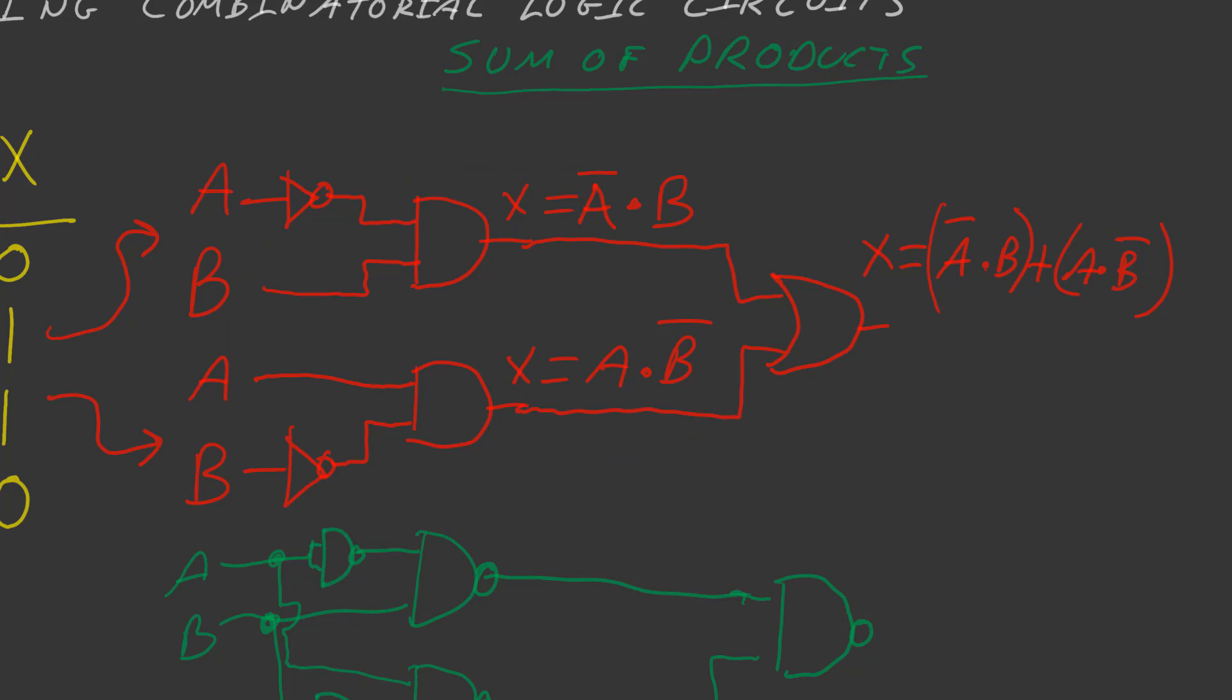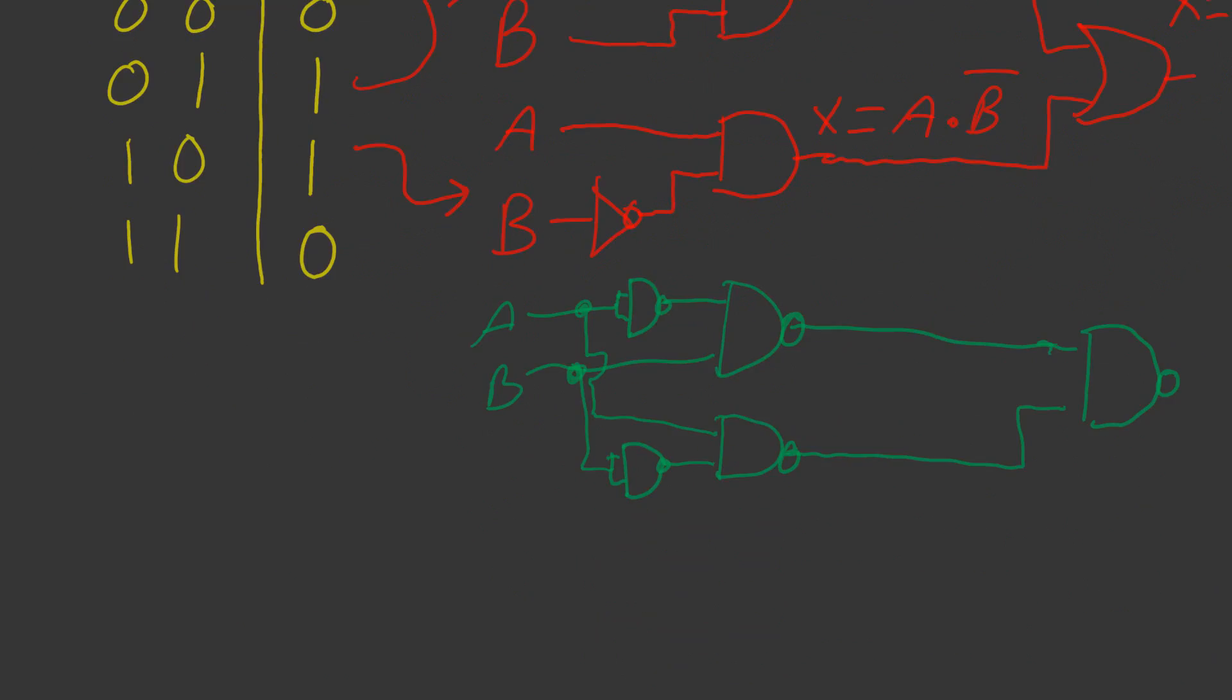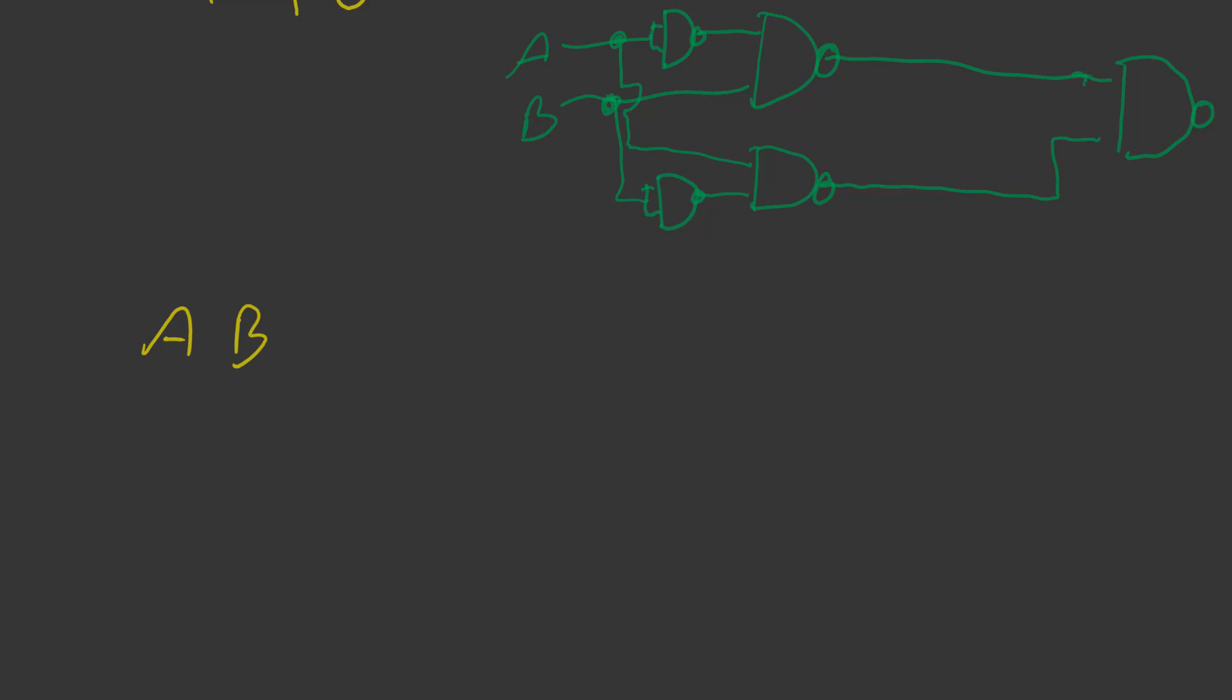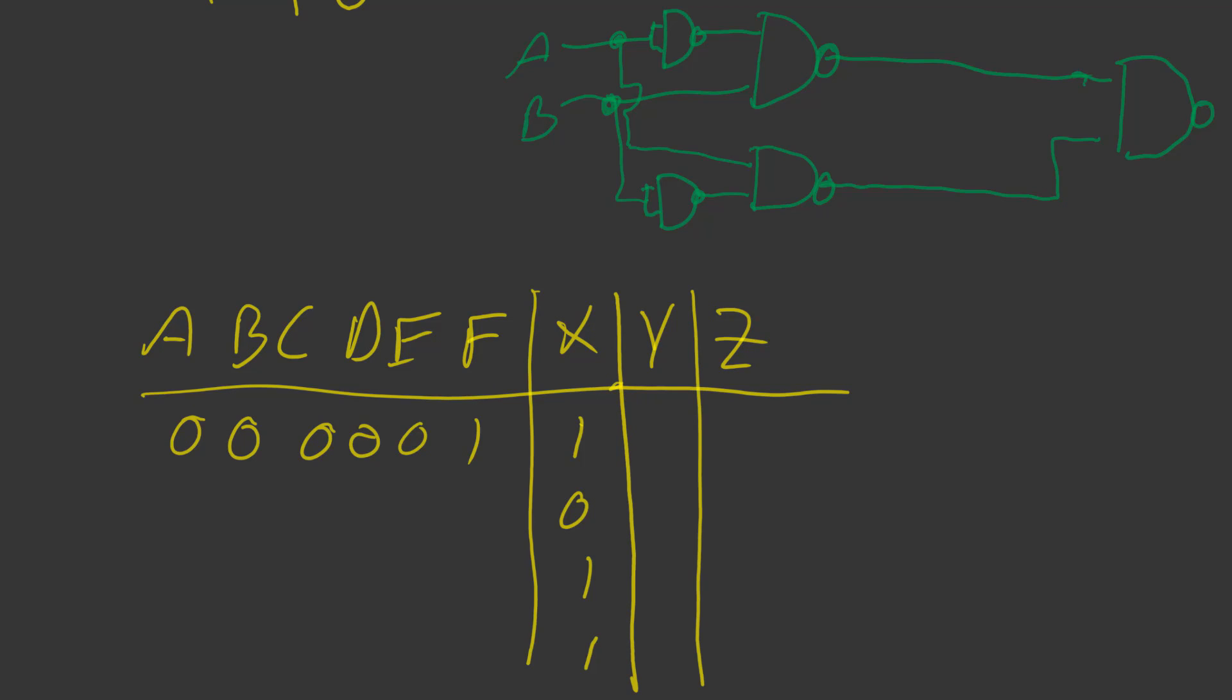And of course we've seen in the previous video how we can actually use DeMorgan's theorem and the various laws to actually simplify Boolean algebra like this. So this would really come into play if you had A, B, C, D, E, F inputs like this. And just those alone would produce a massive truth table. You know, you'd have to go through one, zero - imagine if you had a whole bunch of those. The expression would end up being absolutely enormous.